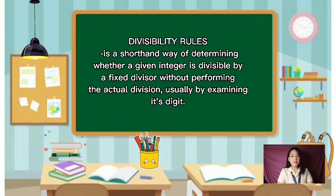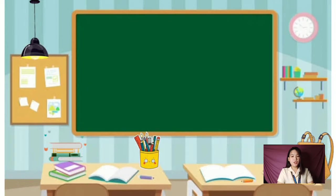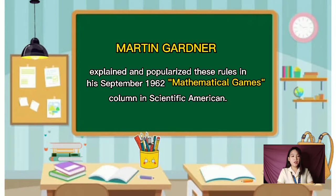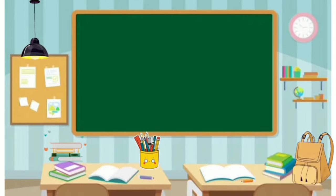Usually, by examining its digits. Martin Gardner explained and popularized these rules in his September 1962 Mathematical Games column in Scientific American.